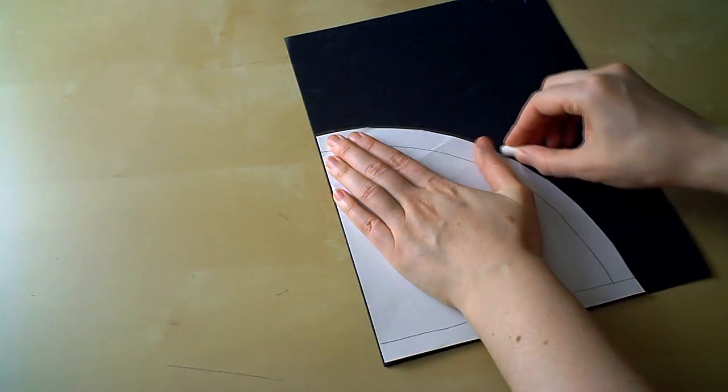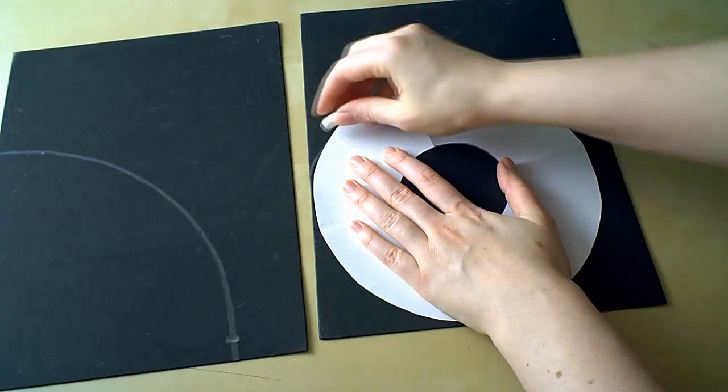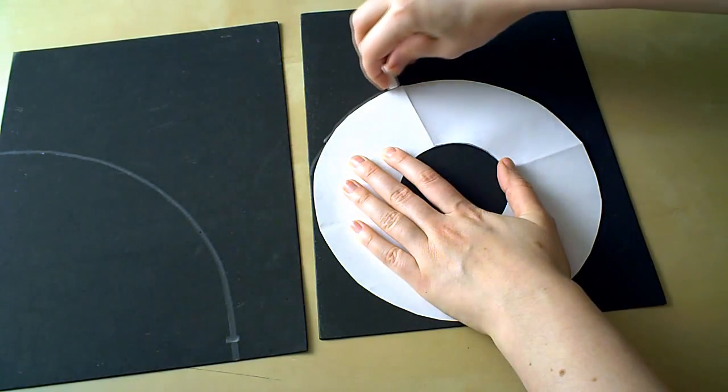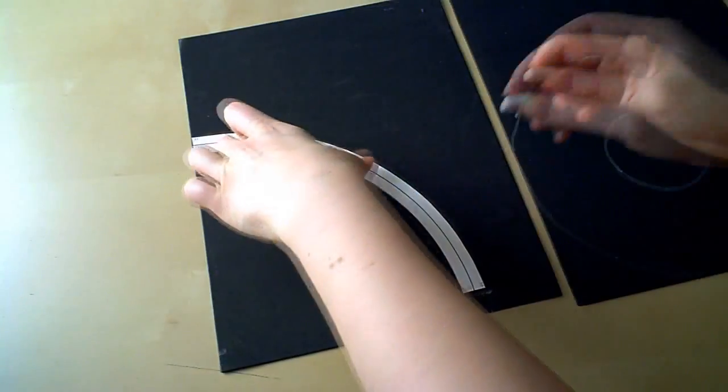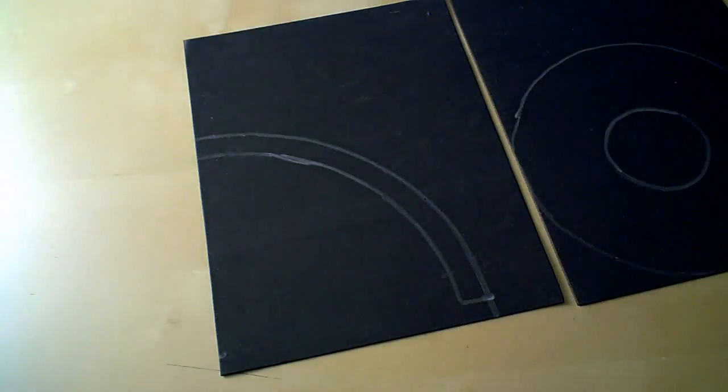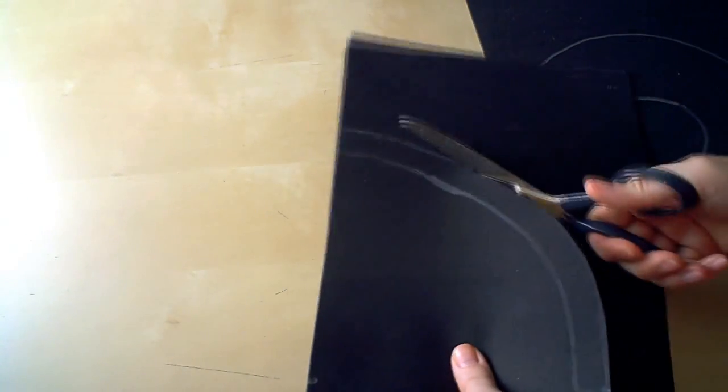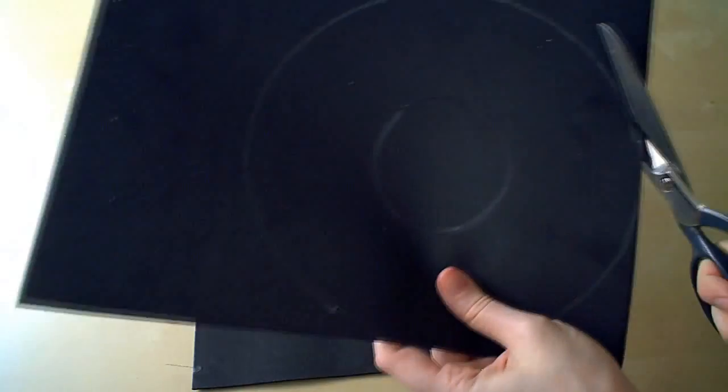Time to get real. Grab your craft foam or whatever you're making your hat out of and trace the cone and brim pattern pieces on the wrong side of the fabric or material. Don't forget to transfer the extra lines from the cone. And then once you've got the pattern lines transferred, it's time to cut the pieces out.